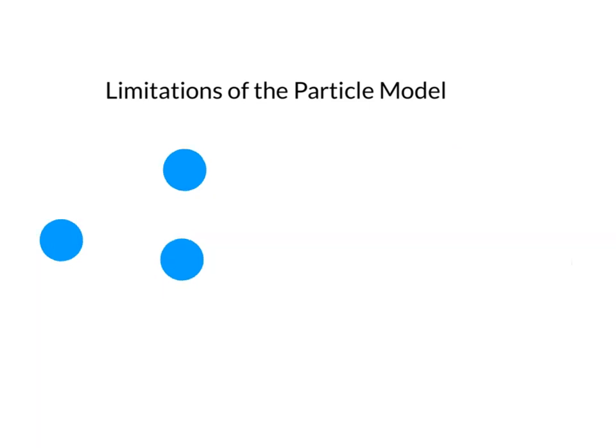We also don't represent the spaces between the particles correctly. If this gas was helium, then the particles would be way too close. The particles in helium have spaces between them that are around 55 times bigger than the particles themselves.